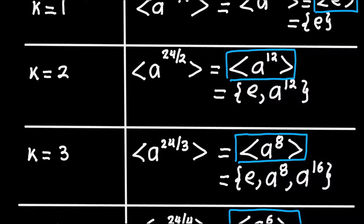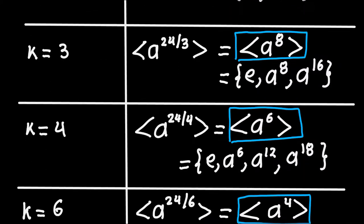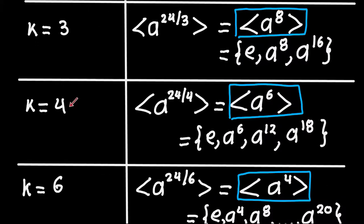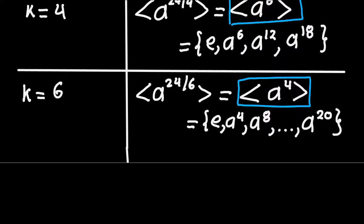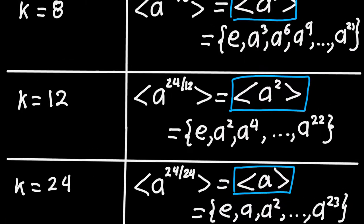For K equals 3, the subgroup is generated by A to the N/K, which is A to the 24/3, so A to the 8. Taking powers of A^8: the identity is always there, then A^8, then A^16, and the third power gives A^24, which is the identity again, so that's the full list. You continue doing the same thing for all remaining divisors: 4, 6, 8, 12, and 24, and that will give you all the subgroups.